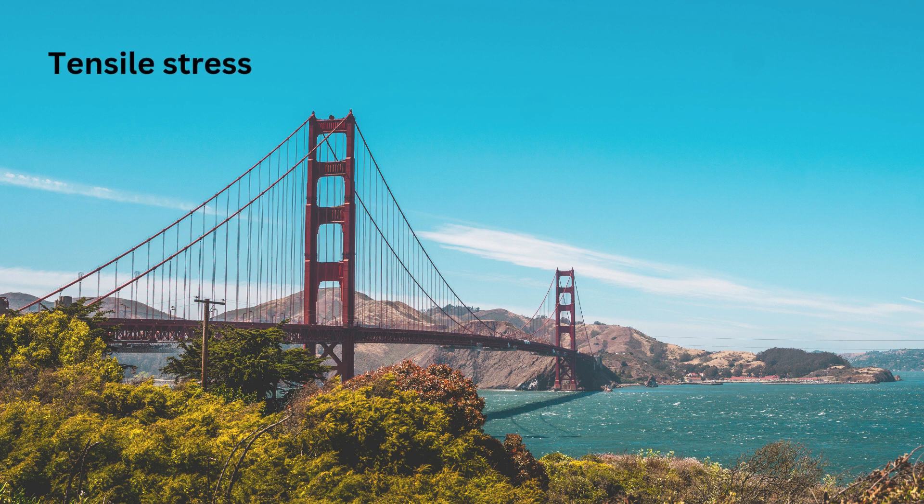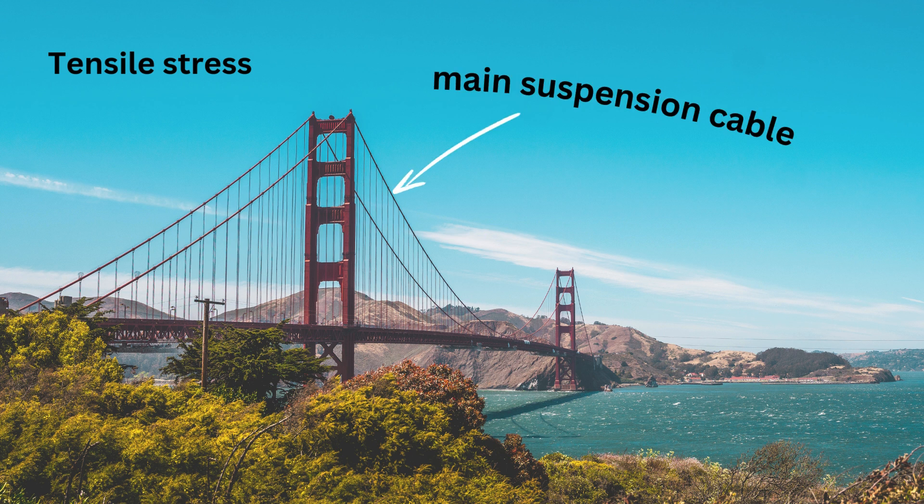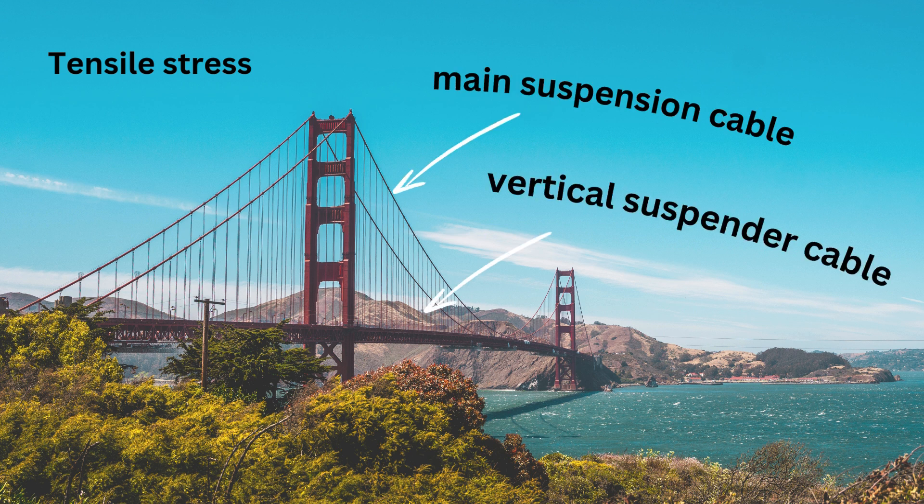An example of tensile stress is found in a suspension bridge, experienced by the main suspension cables and the vertical suspended cables that hold up the bridge deck.